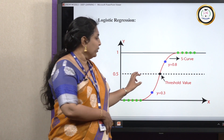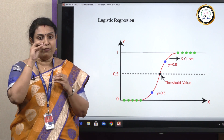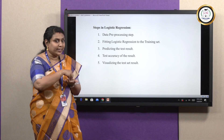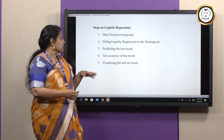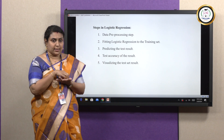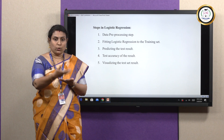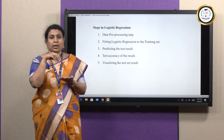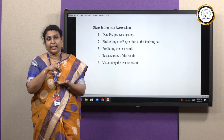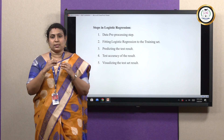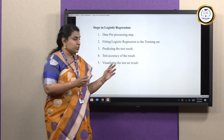A threshold value is fixed in between. The steps in logistic regression are: first, collecting the data — called data pre-processing. After collecting data, we fit a logistic regression to train the dataset. Then we predict the test result — for example, predicting whether someone has a disease like cancer or COVID based on common symptoms. Then we test the accuracy of the result — what accuracy level is achieved in the trained model. Finally, we visualize the test result.